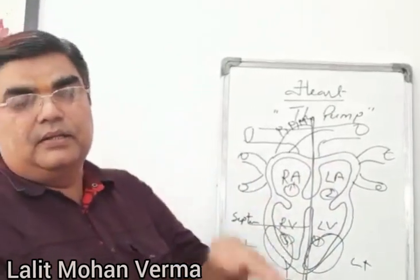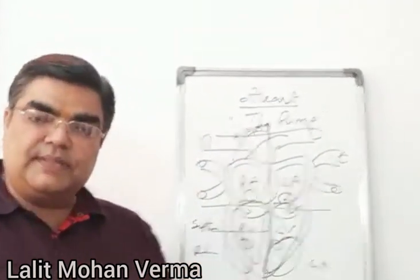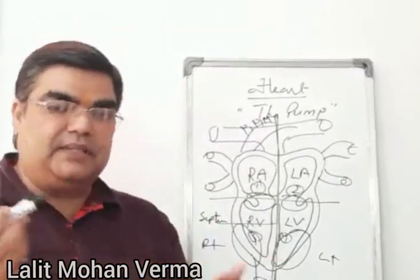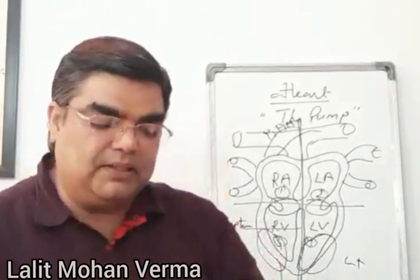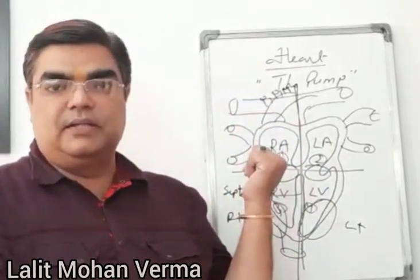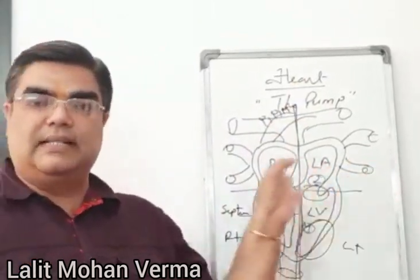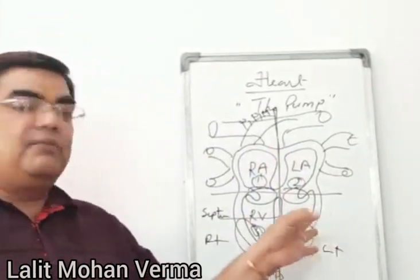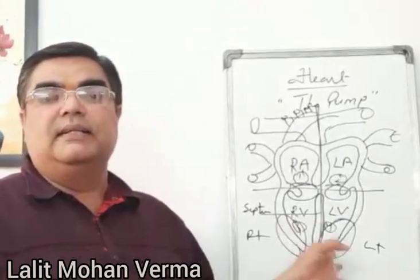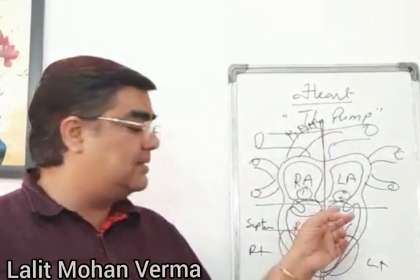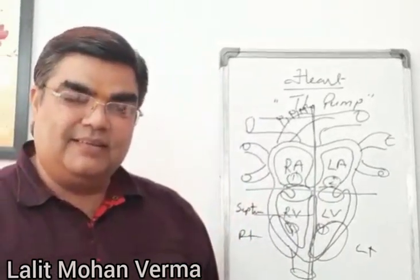The auricle and ventricle are also separated from each other by the tricuspid valve and bicuspid valve. The tricuspid valve is made up of three cusps and the bicuspid valve of two cusps. These valves help push blood forward and prevent backward flow from the ventricle to the auricle. So three key points: there is a septum separating oxygenated and deoxygenated blood; the ventricle walls are thicker than the atria to pump with greater force; and valves prevent backward flow of blood.